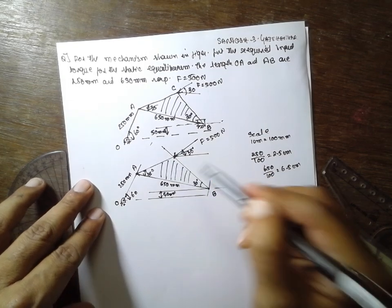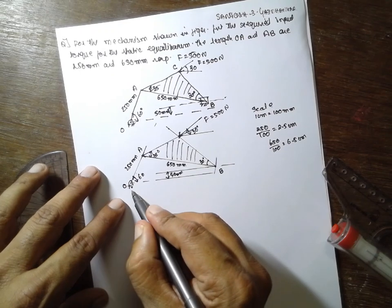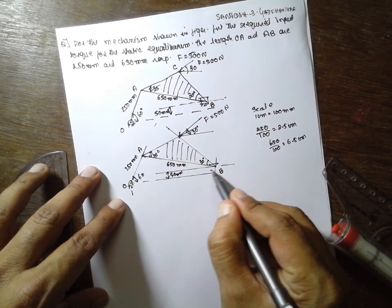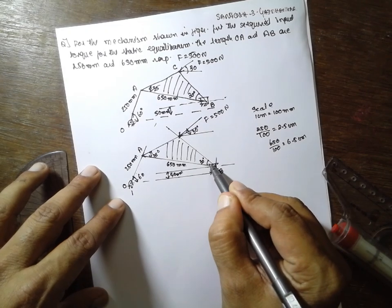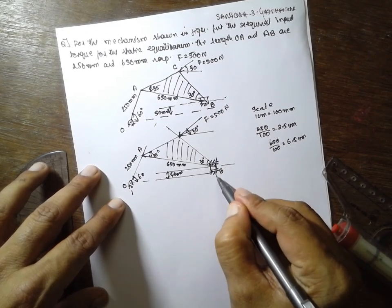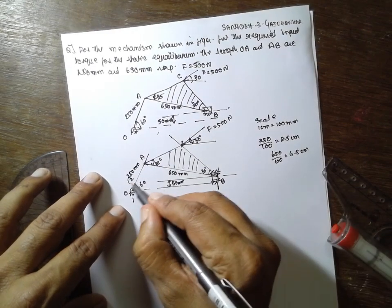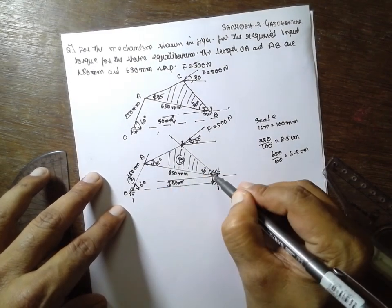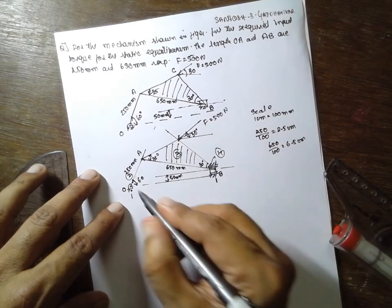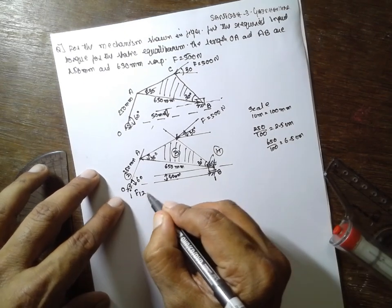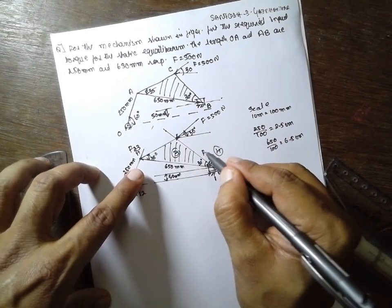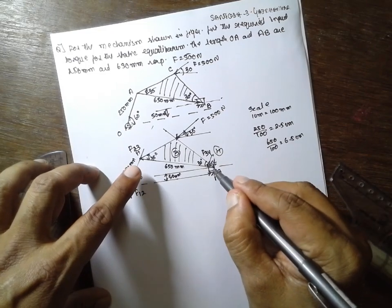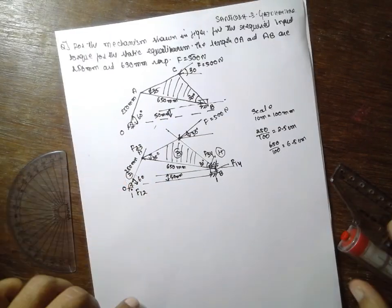Now, go for naming. One link is the piston. Consider it as one link. Second link, third link, and piston as fourth link. Go for forces: F12, F23, F34, and piston will be F14.